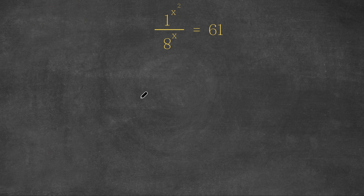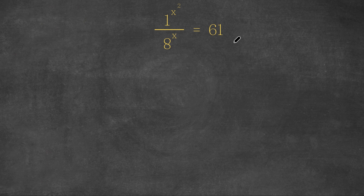Hey guys, welcome back to Qlik Academics. In today's video, I'm going to be teaching you guys how to solve this exponential equation. We have 1 to the power of x squared divided by 8 to the power of x is equal to 61.